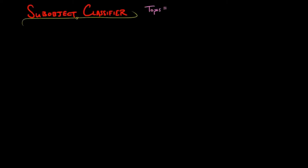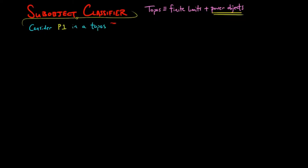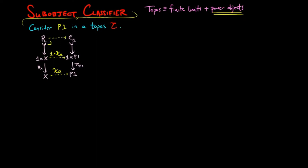Let's talk about the sub-object classifier. Recall that a topos is a category with finite limits and power objects. We will see how the existence of power objects is a generalization of the existence of a sub-object classifier. Consider the power object of the terminal object in a topos E. Then by the universal mapping property of power objects, for each sub-object R of 1 cross X, there is a unique morphism χ_R from X to P1, such that the following diagram commutes and the above square is a pullback.